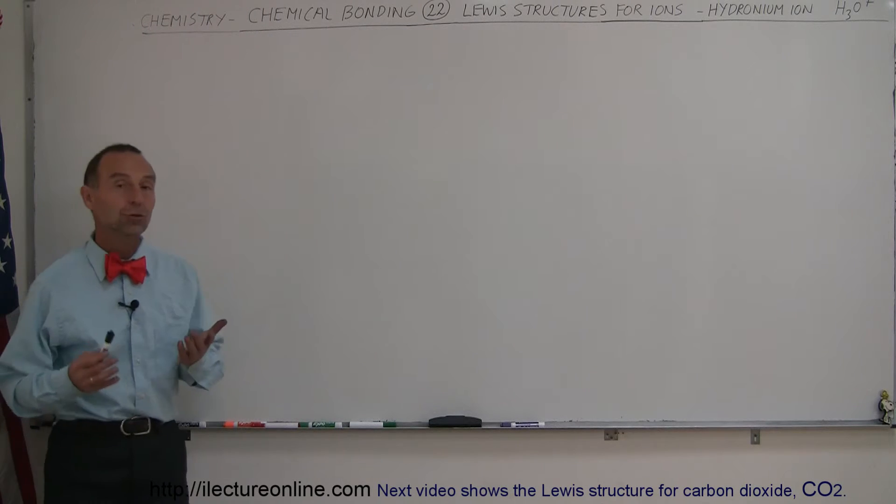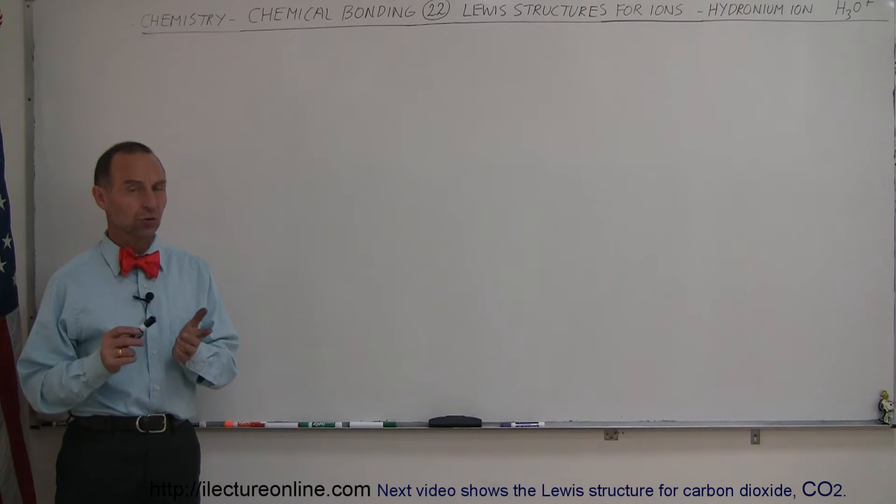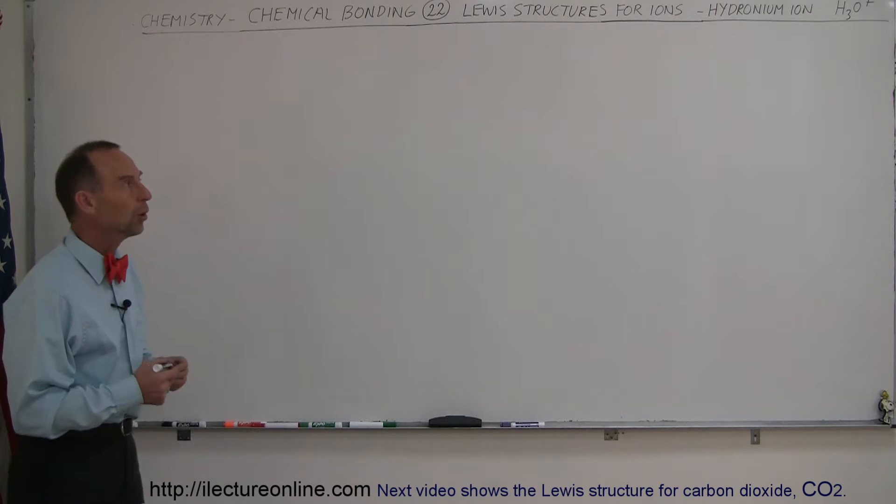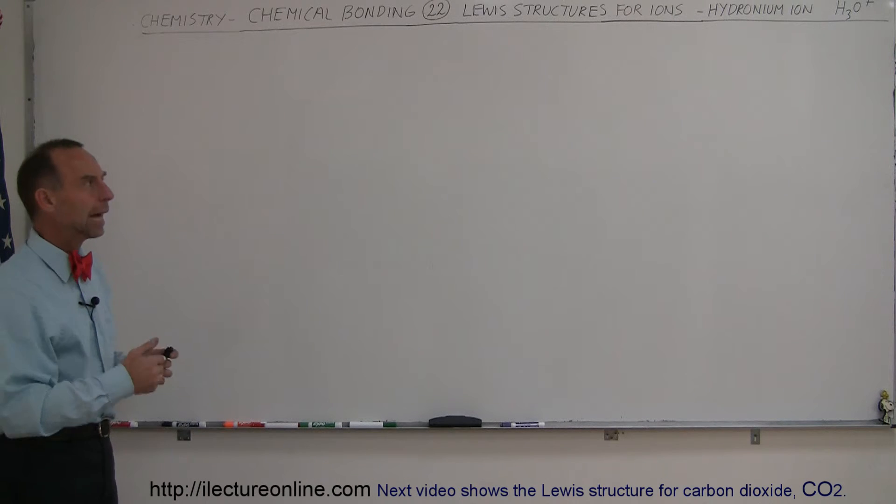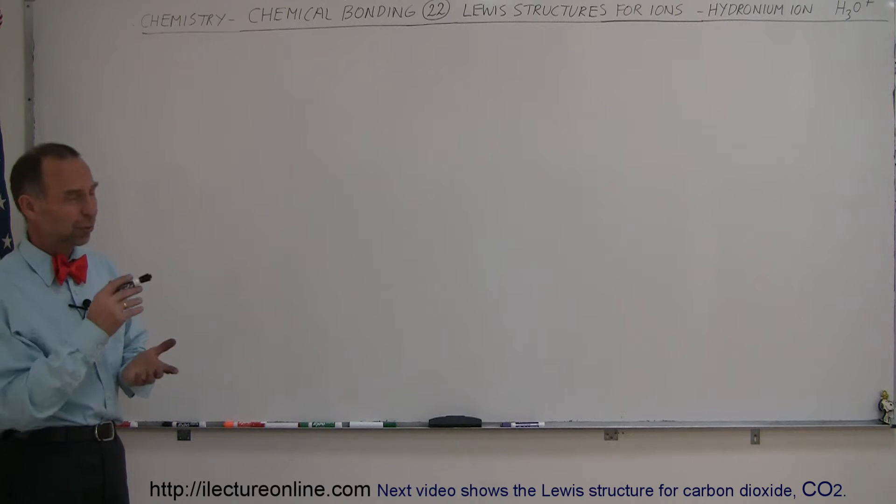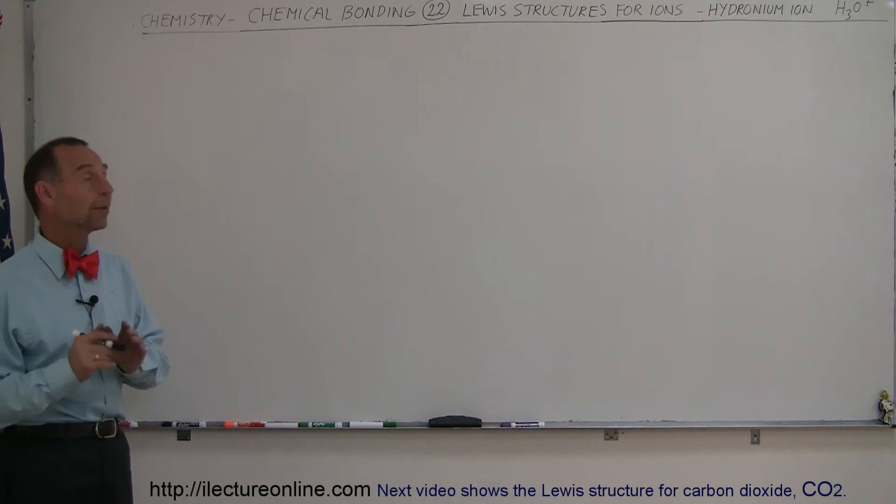To draw a Lewis structure for the hydronium ion, we're going to start with a Lewis structure for just simple water, H2O, and then we'll work our way up to the ion H3O+. It has a positive charge, and we'll see in just a moment how that happens.